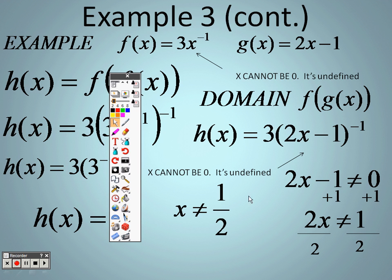What that means is for f of g of x, this function right here, this new function that we created, I can plug anything I want to in for x. Anything in the world I can plug in except for 1 half. If I plug a 1 half in there, it will not work. So anything in the world can be the domain. I can plug in anything for x except for 1 half.